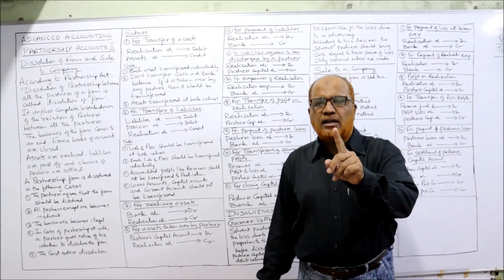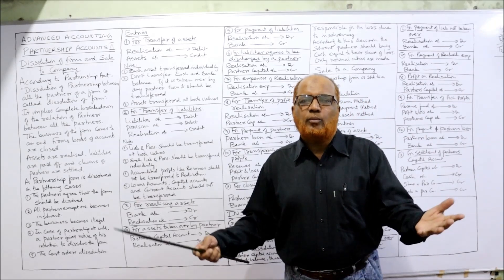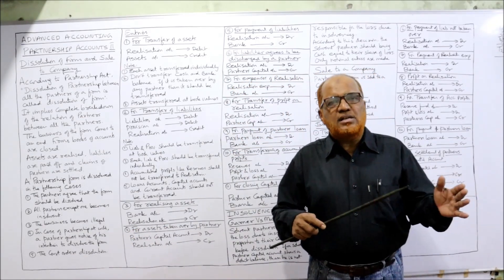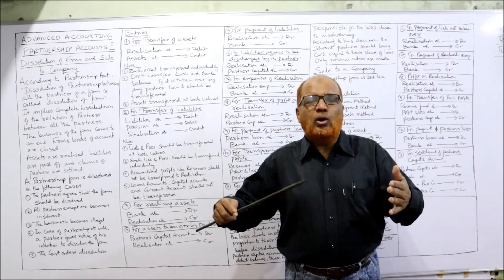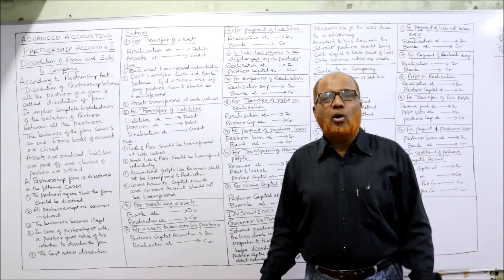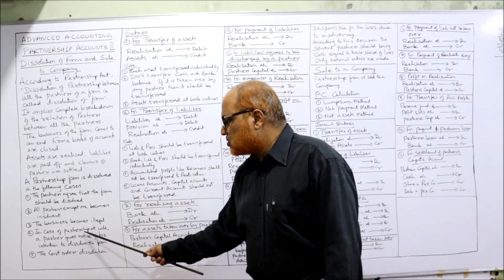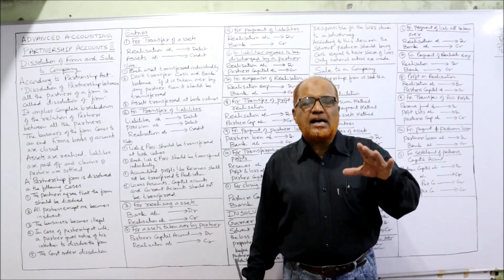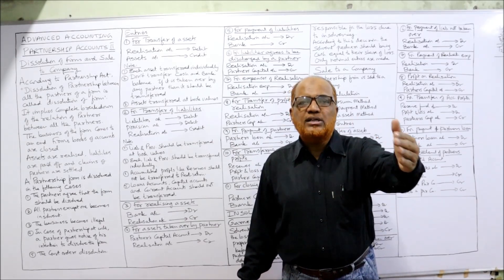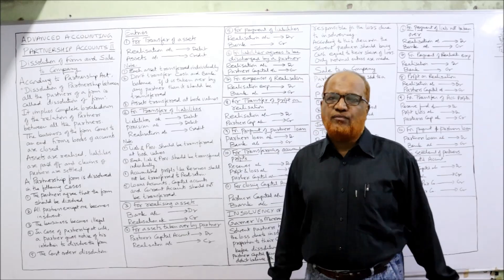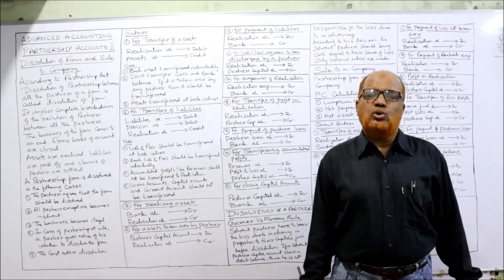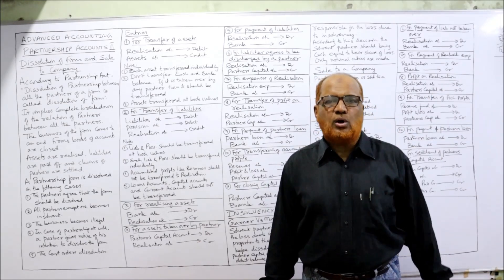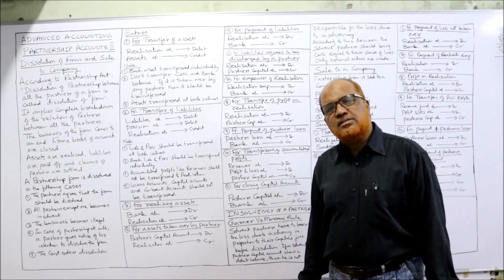Second case: all the partners except one become insolvent, meaning only one partner is left and all others have become insolvent — then automatically the partnership will be dissolved. Third case: the business becomes illegal. If due to a new law the business has become illegal, it will automatically be dissolved. Fourth case: in a partnership at will, one partner gives notice of his intention to dissolve it. Fifth case: the court orders dissolution — under certain circumstances the court has the power to order the firm to dissolve.